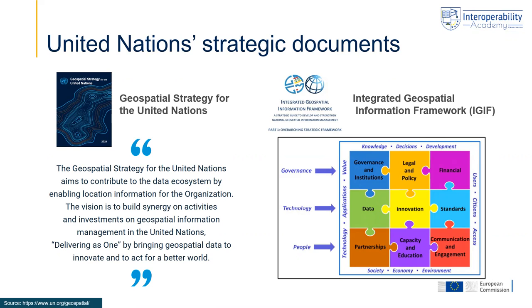The Integrated Geospatial Information Framework comprises three different documents: an overarching strategy framework, an implementation guide, and a series of country-level actions. The figure clearly shows the nine so-called strategic pathways included in the framework, highlighting the importance of elements related to governments, technology, and the people side.